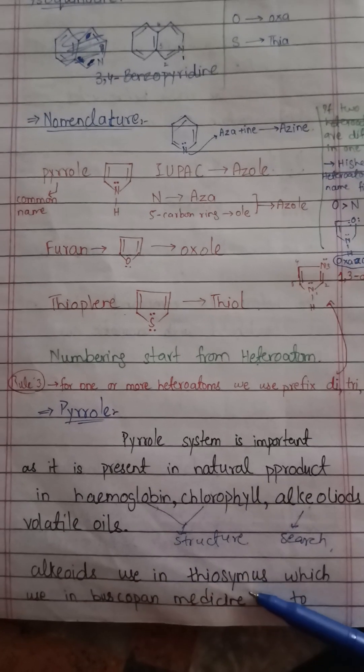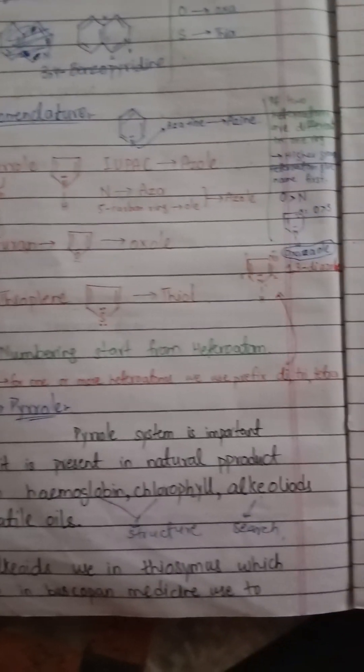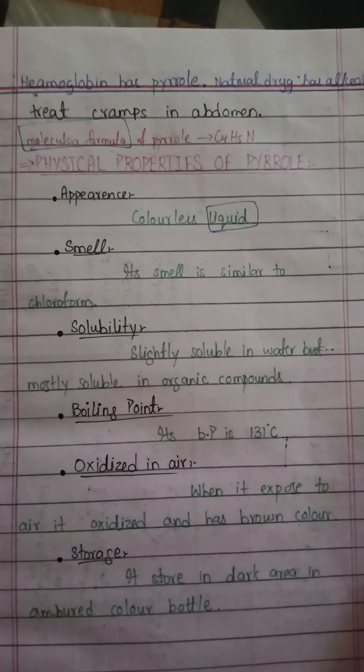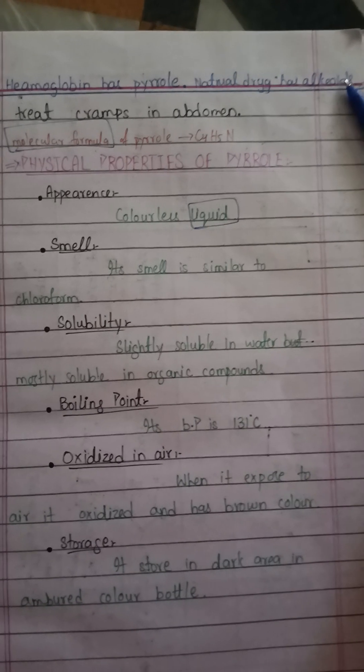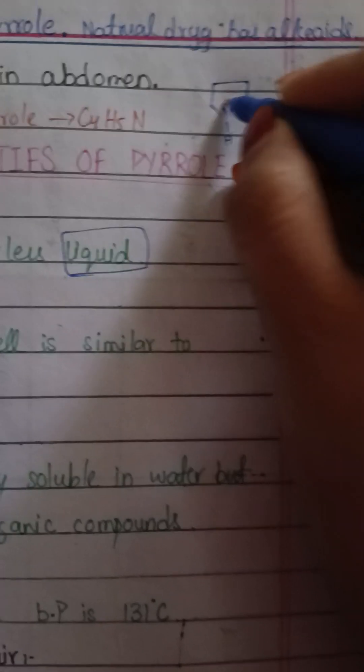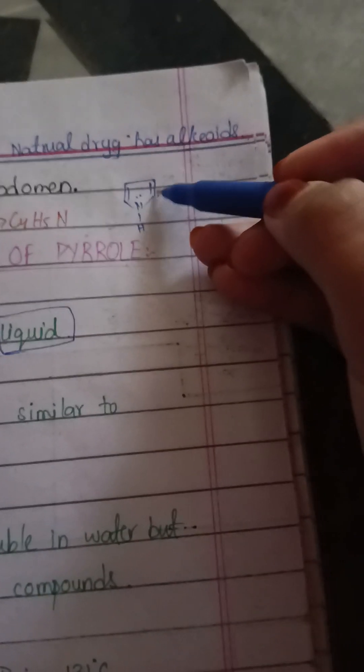Alkaloids are used in medicines such as buscopan, which is used to treat cramps in the abdomen. The molecular formula of pyrrole can be counted from its structure: it has four carbon atoms (C4) and five hydrogen atoms (H5) — one on nitrogen and four on the ring carbons — plus one nitrogen. So the molecular formula of pyrrole is C4H5N.